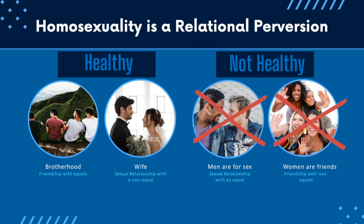A healthy masculine man sees men as equals that he has brotherhood and friendship with, and it's with his wife that he has a sexual relationship with a non-equal. For the homosexual, it's flip-flopped — men are for sex, so he's having sex with equals, and women are friends. Those who struggle with homosexuality, as part of their healing as they're walking with the Lord, are going to have to learn through the power of God how to desexualize men and learn how to relate to them in God's proper patriarchal ordering. Through the power of Christ, that individual who's struggling can learn how to see men the way God intended, and God can transform his desires.